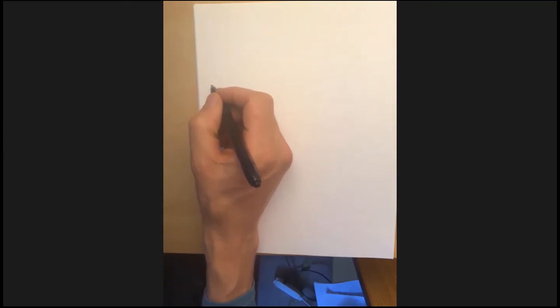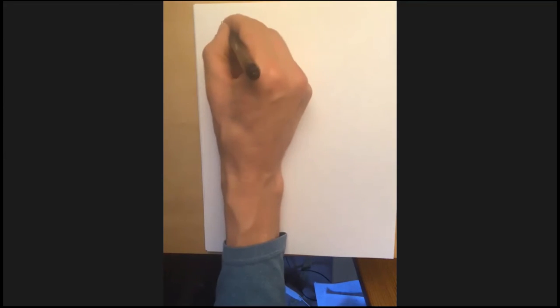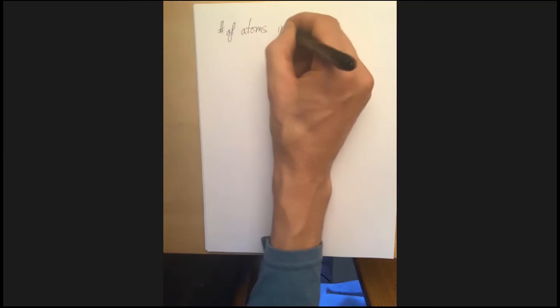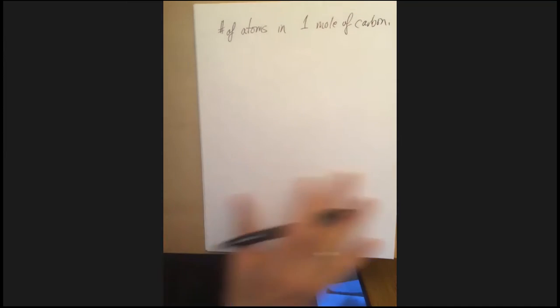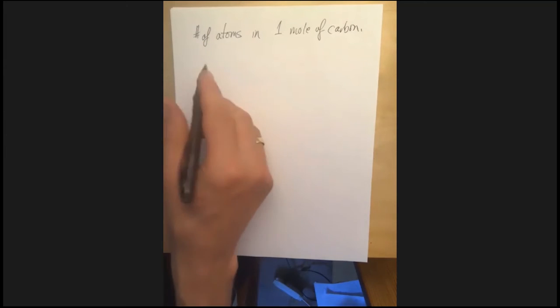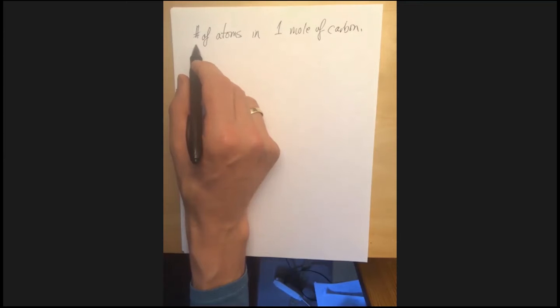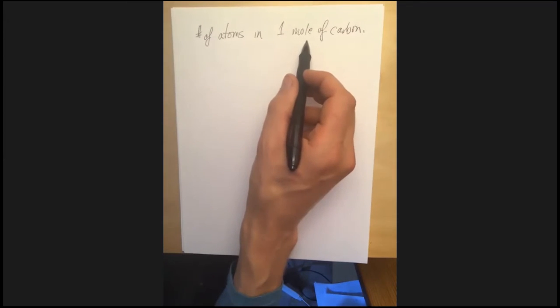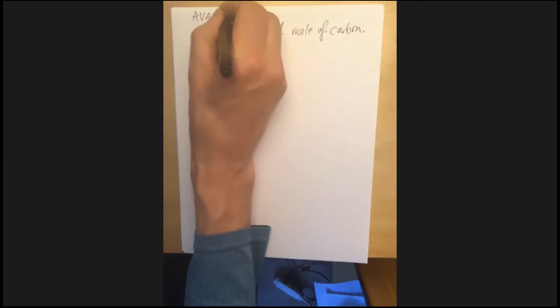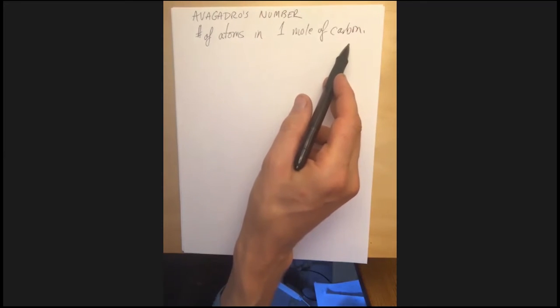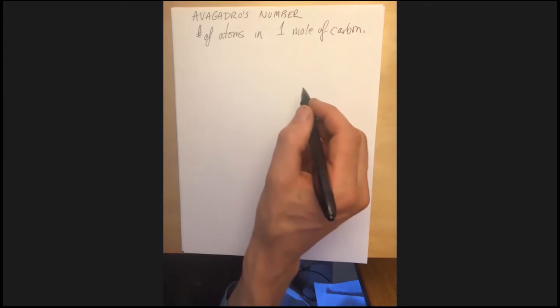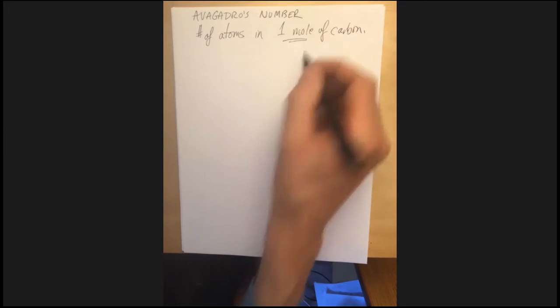So Avogadro's number is defined as the number of atoms in one mole of carbon. And I don't even remember today why carbon was chosen. Maybe it was because it was the most simple one, but we use Avogadro's number as a way of converting from number of atoms to number of moles.